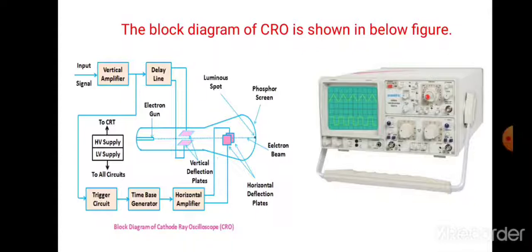The time-based generator is useful for the horizontal deflection of the electron beam. The horizontal amplifier is useful for the deflection plates of the cathode ray tube. The last component is the power supply. The main function of the power supply is that it produces both high and low voltages for the cathode ray tube. The negative high voltage and positive low voltage are supplied to the cathode ray tube and other circuits.